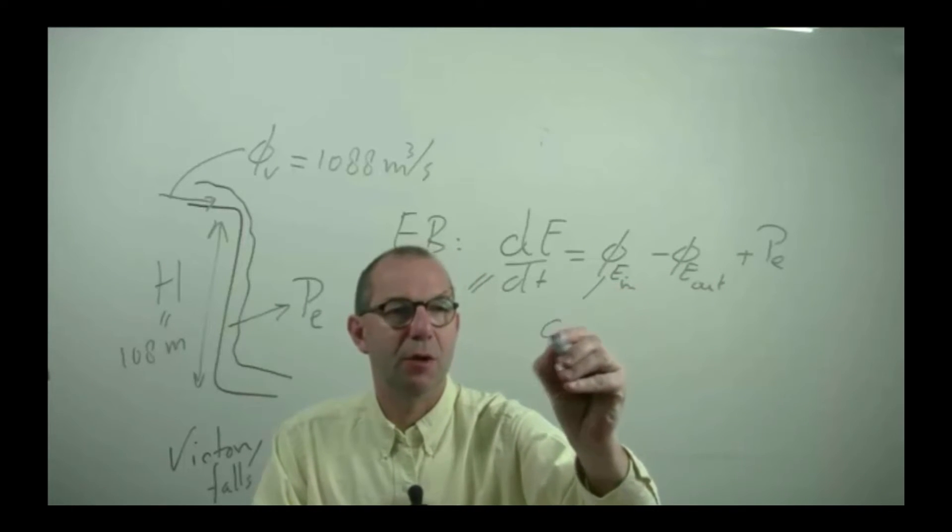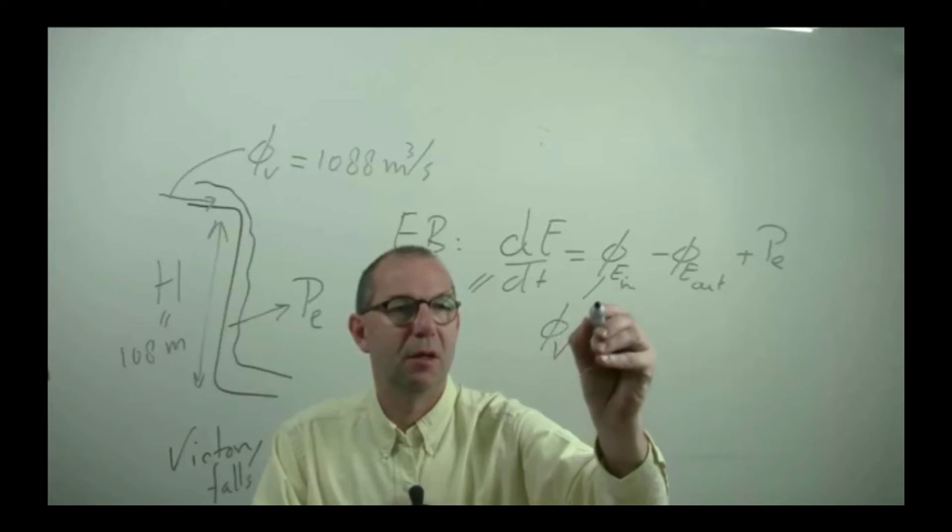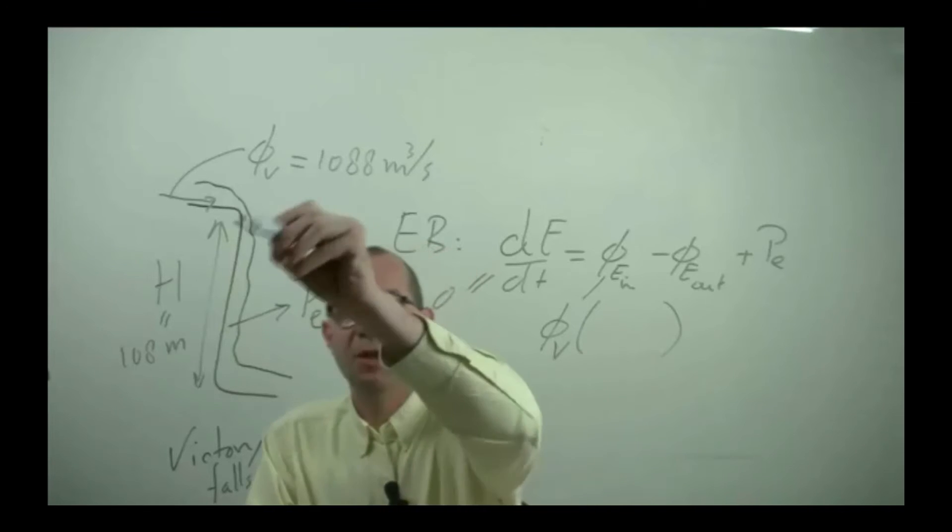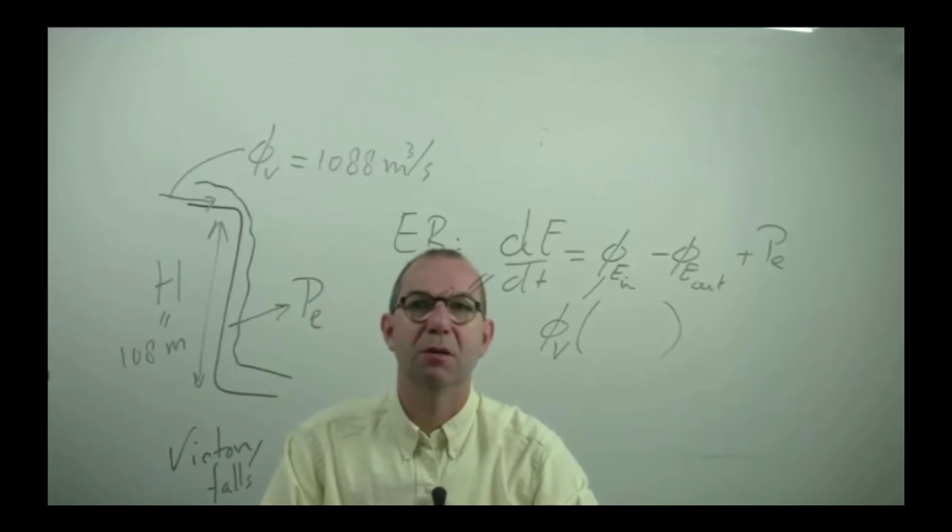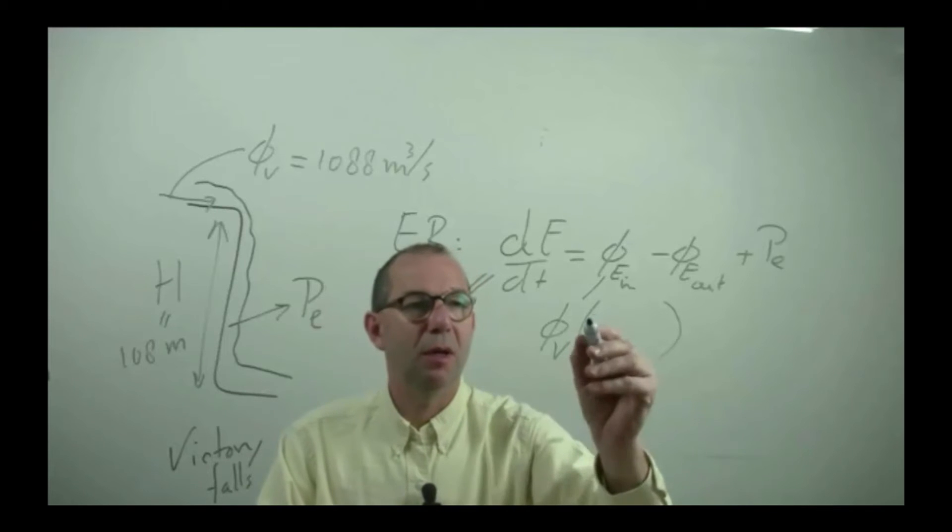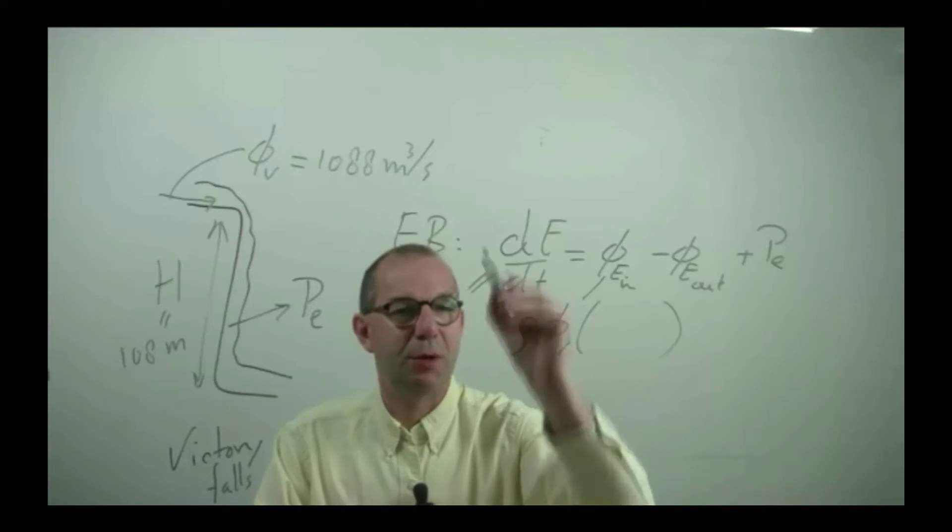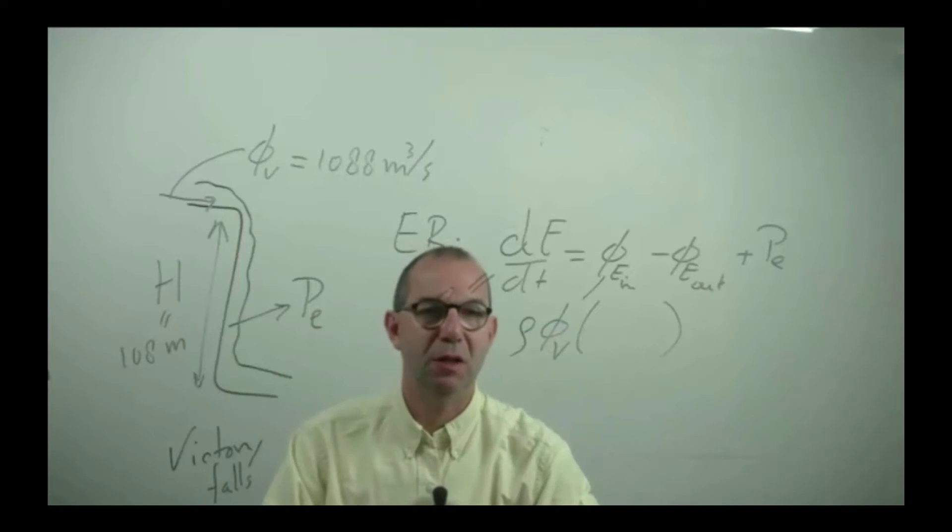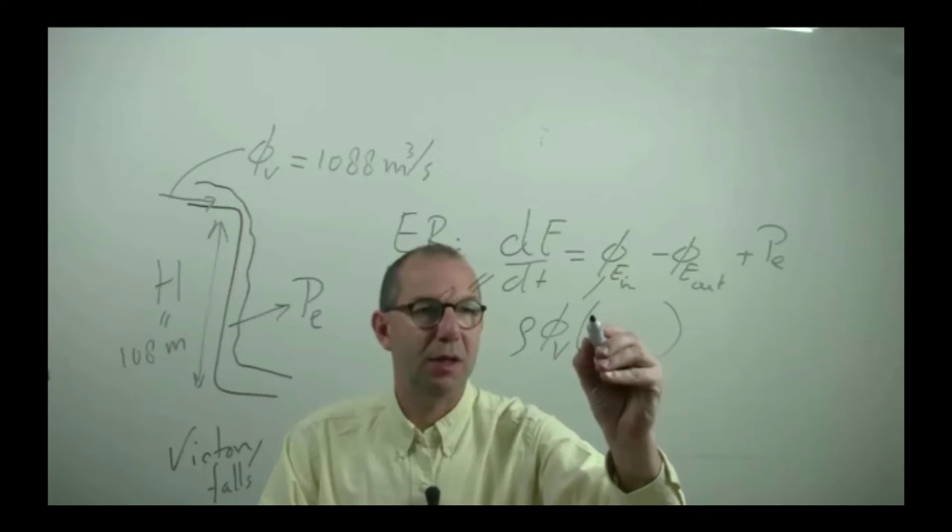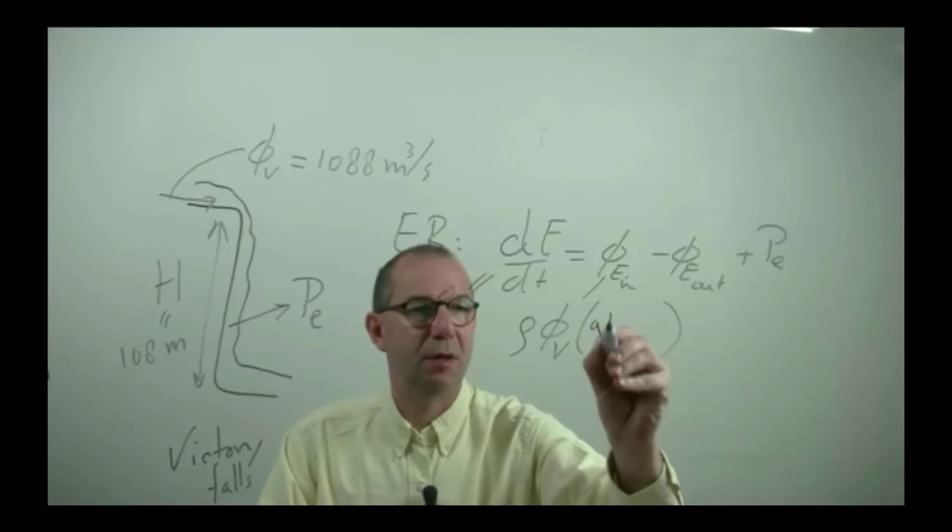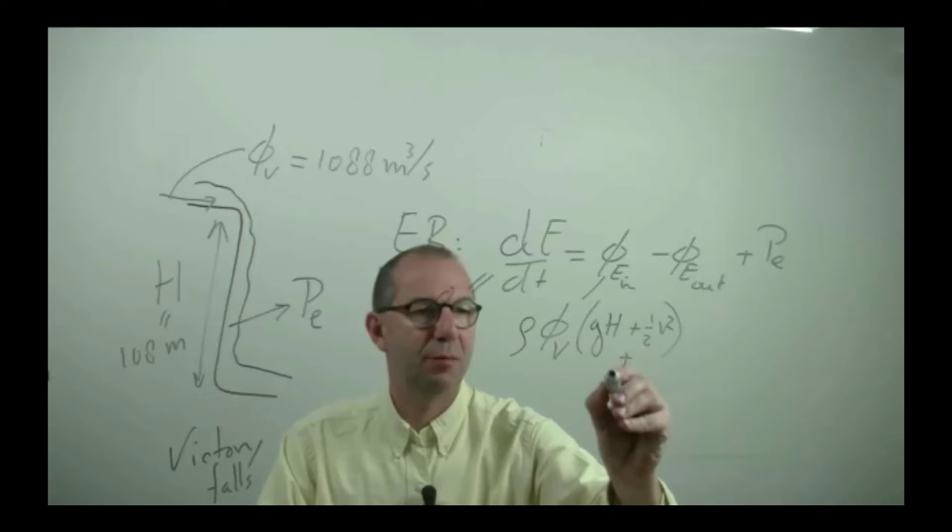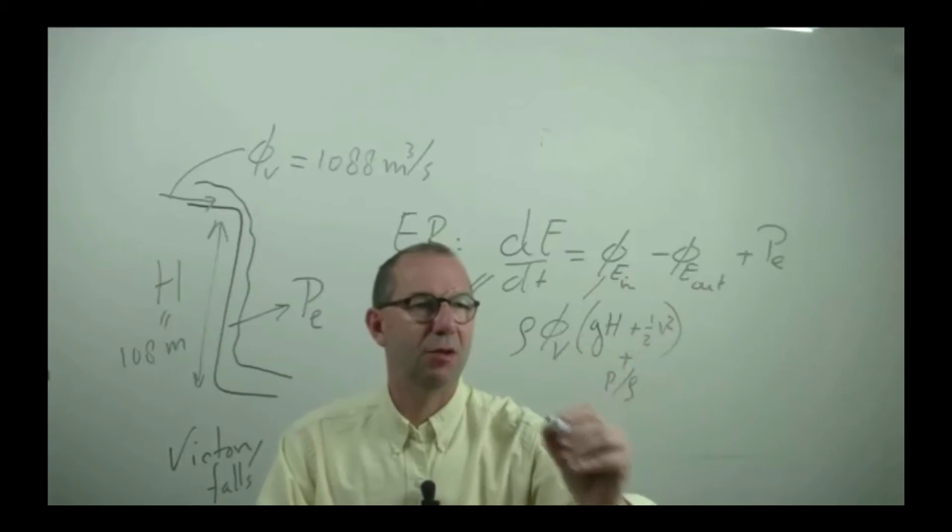This can be written as the flow rate times the energy concentration. And I need to fill in here how much energy a cubic meter contains. Well, I can do that easier per kilogram. So I turn this into a mass flow rate. Mass flow rate and then the amount of energy per unit of mass. It has potential energy, GH. It has kinetic energy. It has pressure energy. These are the amounts that come in.